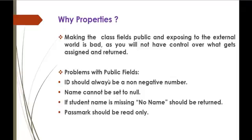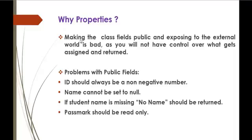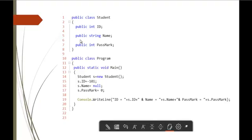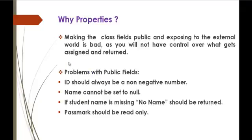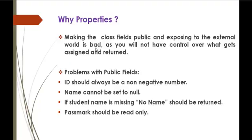It is against the business rule — we should not set an ID to a negative number, but since it is public, we are able to do so. Coming back to the previous slide, name cannot be set to null, but here I have set the name to null because the field is public. Also, if the student name is missing, no name should be returned, but when I run this program, I get an empty space instead. And pass mark should be read-only, but here I am trying to set the pass mark value, which should not happen.